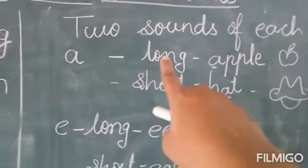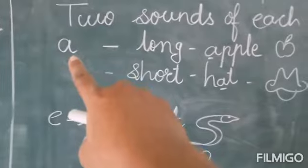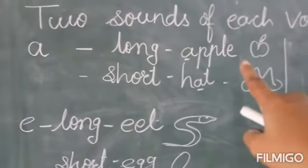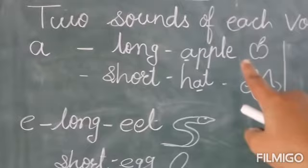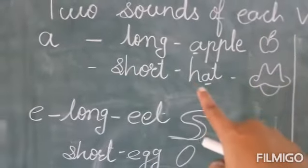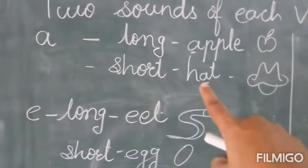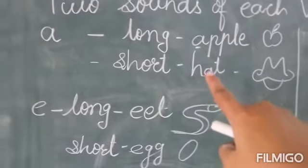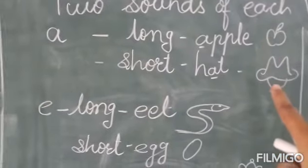So the long sound of A is A, A, A, apple. And the short sound of A is A, A, A, hat.